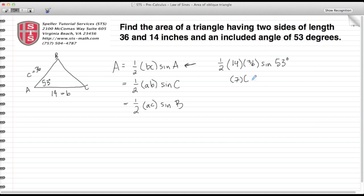One-half times 14 leaves me a 7. Then 7 times 36 leaves me with 252 times the sine of 53 degrees. When I evaluate that in a calculator, I come up with approximately 201.26 square inches.